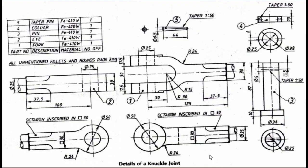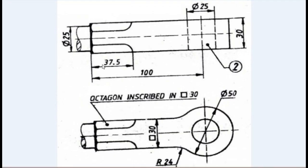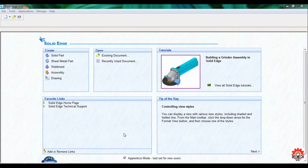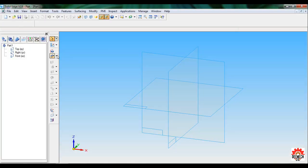Given are the details of knuckle joint part number two. You can note down the dimensions. You can find all the supporting files in the description below.